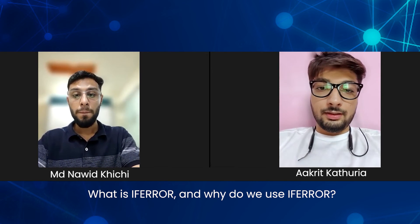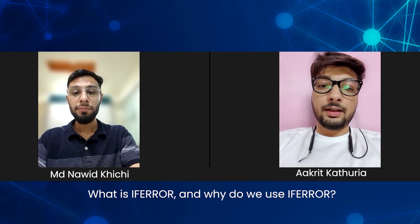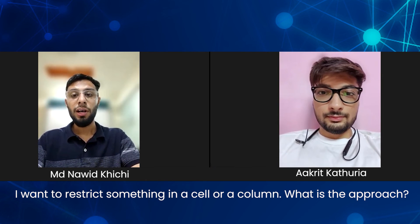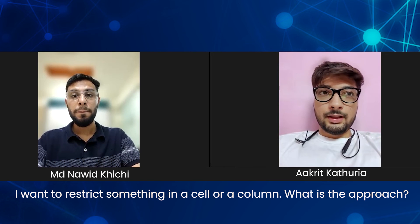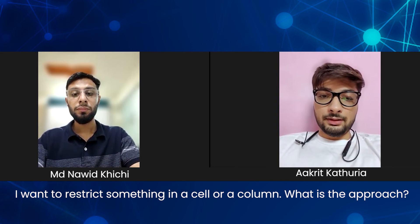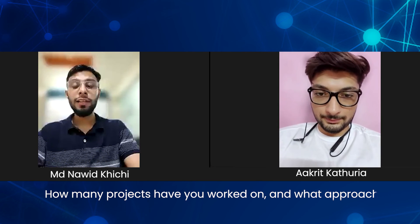What is IFERROR and why do we use it? IFERROR is used to mask errors — if there is an error in a formula, we can use IFERROR to hide it and show another value instead. To restrict something in cells or a column, we use Data Validation. For example, if I want only dates in column A, I go to Data Validation, select the whole column, customize the formula, and also set a restriction message.